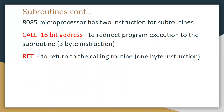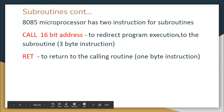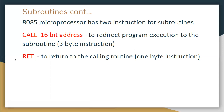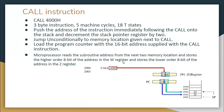The 8085 microprocessor has two instructions exclusively for subroutines: CALL and RETURN. CALL transfers control to the subroutine and RETURN transfers control back from the subroutine to the main program. CALL is followed by a 16-bit address to redirect program execution — it is a three-byte instruction. RETURN is a single-byte instruction that returns to the calling routine.